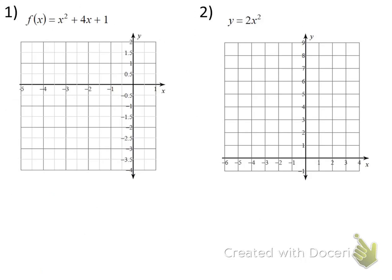First, make sure it's in standard form — it already is. Standard form is ax squared plus bx plus c. So I ask myself: what is a? A is the number in front of x squared, so a equals 1. B equals 4, and c equals 1. I've identified these three numbers: a, b, and c.